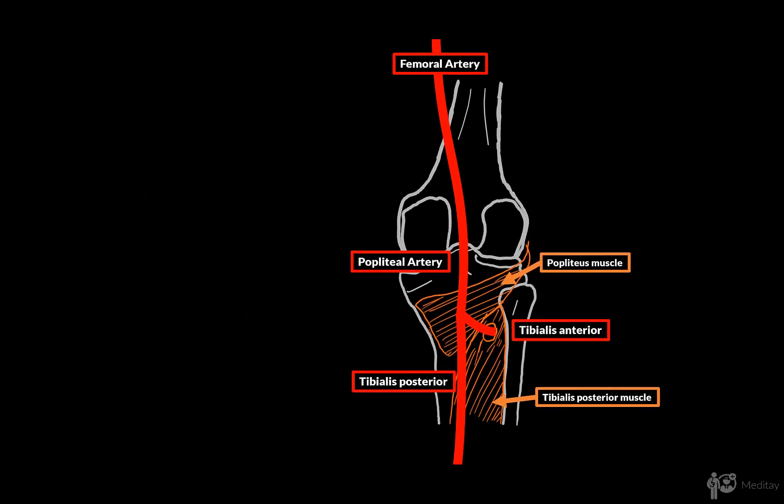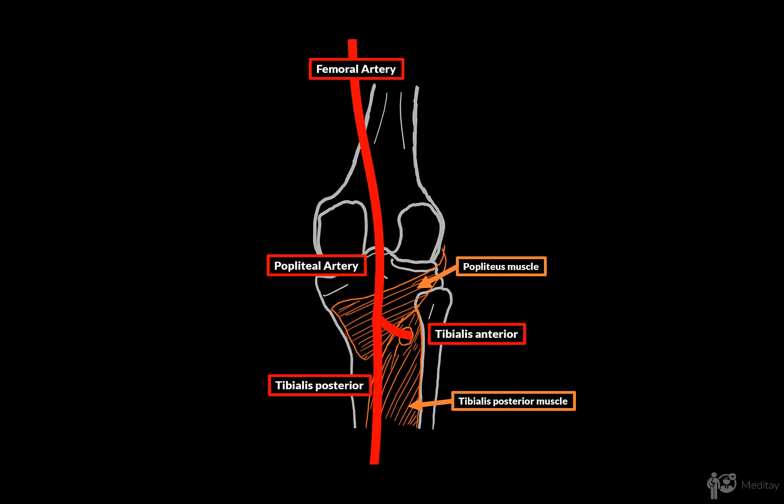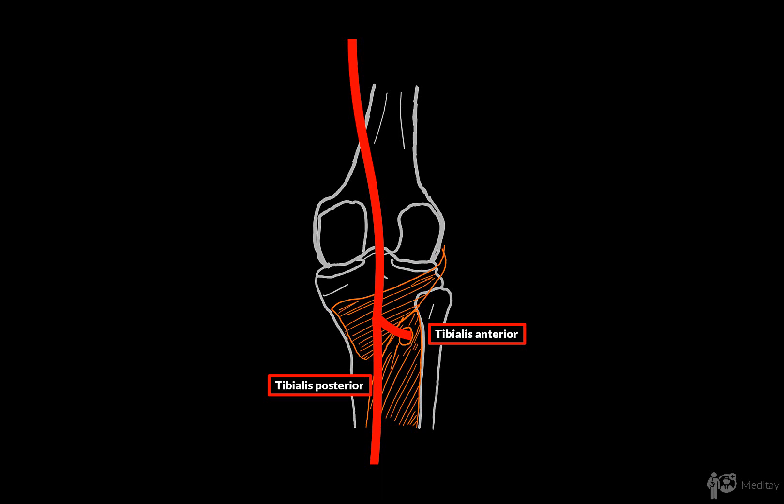Along its course, the popliteal artery gives off six side branches for the patellar network and the superficial muscles of the posterior group of the lower leg. The first two are the superior medial and the superior lateral genicular arteries, which wind around the medial and lateral condyle of the femur to supply the knee with blood.